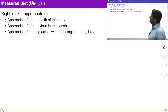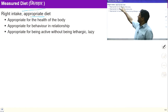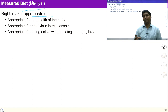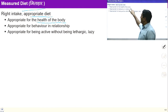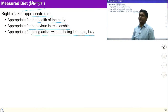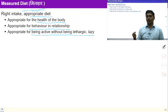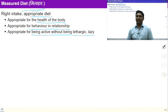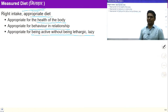Measured diet means right intake, appropriate diet. A measured diet is required for the appropriate health of the body and for appropriate behavior in relationships — appropriate for being active without being lethargic or lazy. For all this we require measured diet. By following these principles our interaction with others becomes harmonious. Along with this, the work of purification at the level of body, speech, and mind starts through the practice of these principles.